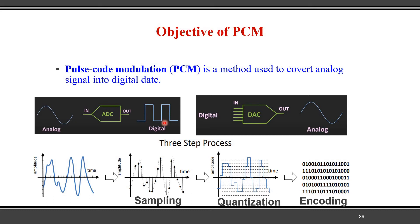To perform this operation we do three different processes. First is the sampling process: the continuous time analog signal is converted as a discrete time signal. Afterwards we perform the quantization process — this is called a round-up process. Then after quantization, that signal is applied to the encoder whose output is in terms of zeros and ones. So the input is analog and the final output of pulse code modulation is digital — zeros and ones.